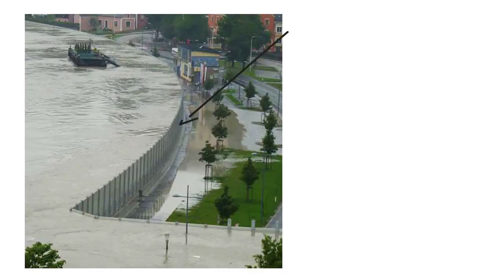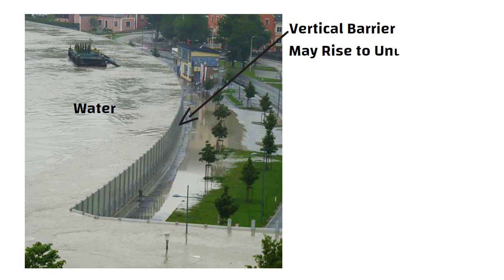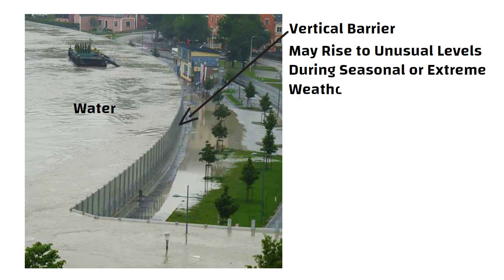Hello Friends. A flood wall is a vertical artificial barrier designed to temporarily contain the waters of a river, lake, or other waterway which may rise to unusual levels during seasonal or extreme weather events.